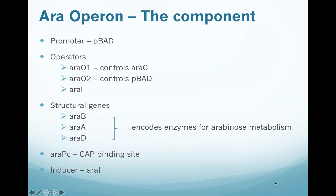Let's look at the components of the ara operon. It has a promoter called PBAD for the genes BAD. We have three operators: araO1 which controls araC, araO2 which controls PBAD, and another one for the inducer site araI. The structural genes are called araB, araA, and araD. Each codes for specific enzymes for arabinose metabolism, all acting in the pentose phosphate pathway. We also have araPC which is the CAP binding site, and the inducer site araI, because the ara operon has both positive and negative regulation.